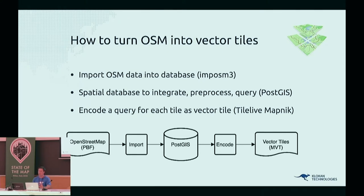The basic overview of what happens when you generate tiles in OpenMapTiles is straightforward. The first step is getting OpenStreetMap data into PostGIS, where we use Imposm 3 for the conversion. Then we run SQL operations on PostGIS, such as generalization for different zoom levels, and bring in other sources like Natural Earth data and shapefiles. Once everything is in PostGIS, we use TileLive-Mapnik to make SQL queries for each tile and encode the result into protobuf format. Any of these components can be swapped out — it's all about the schema and definition of what appears at which zoom level.